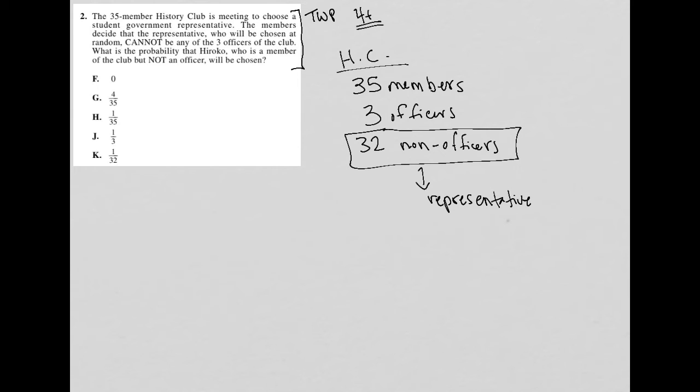The next question says, what is the probability that Hiroko, who is a member of the club but not an officer, will be chosen? So Hiroko is one of these 32.